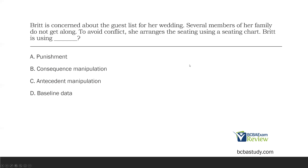Question six. Britt is concerned about the guest list for her wedding. Several members of her family do not get along, so to avoid conflict, she arranges the seating using a seating chart. What is Britt using? She's taking preventative measures — she wants to prevent these things from happening. When we prevent something from happening, are we using antecedent manipulations or consequence manipulations? Antecedent arrangements are preventative; we're preventing something from occurring. Consequence manipulations are reactive — a response took place, and now we're reacting through consequences.